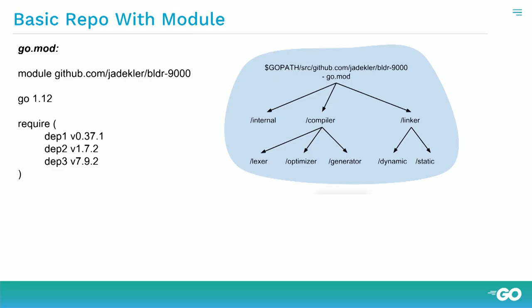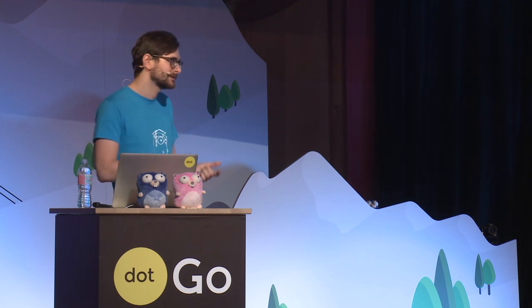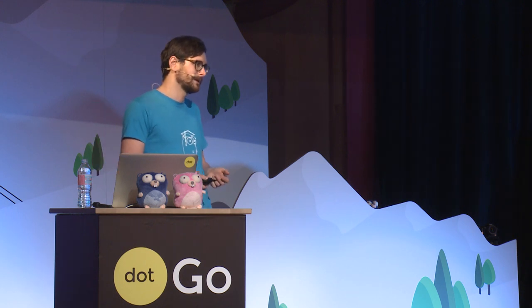The key piece is the requires statements. This module says it depends on depth-one, depth-two, and depth-three at various versions. These actually have to be dependencies of packages — maybe the generator depends on depth-one, the compiler on depth-two, and internal on depth-three. If no package actually depends on these, the next time you run go mod tidy, they'll just get blown away. So they truly are dependencies of your library.